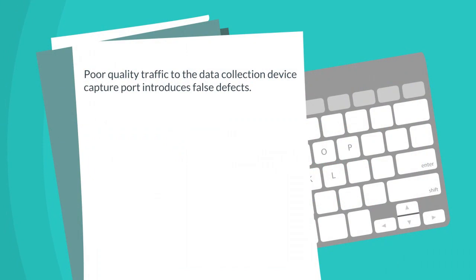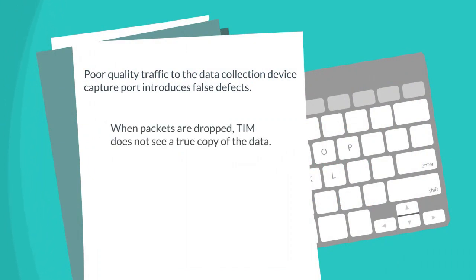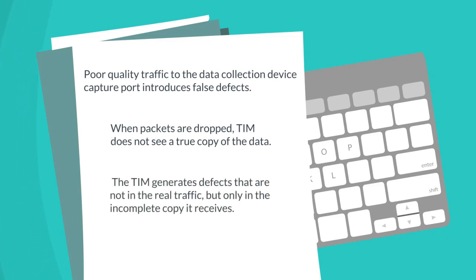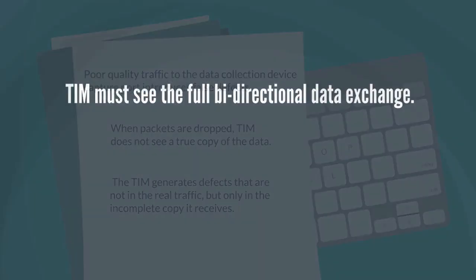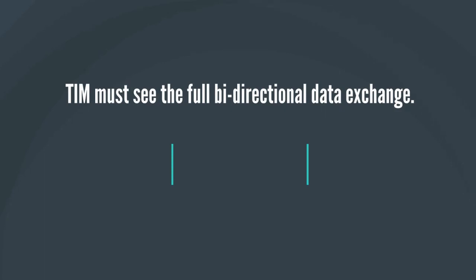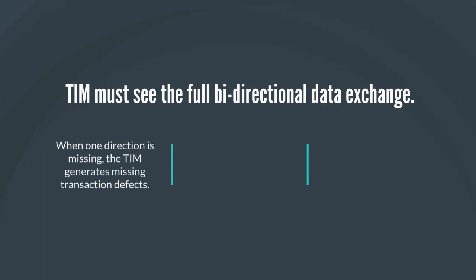Poor quality traffic to the data collection device capture port introduces false defects. When packets are dropped, TIM does not see a true copy of the data. The TIM generates defects that are not in the real traffic, but only in the incomplete copy it receives. TIM must see the full bidirectional data exchange. When one direction is missing, the TIM generates missing transaction defects — for example, when responses from the application server to the client are missing.